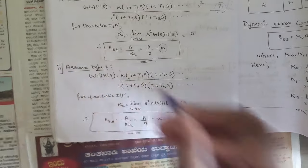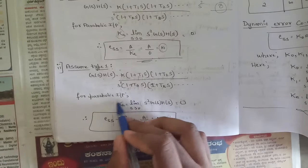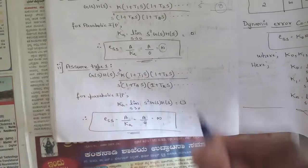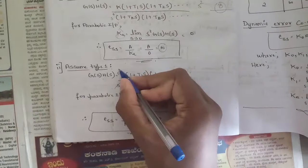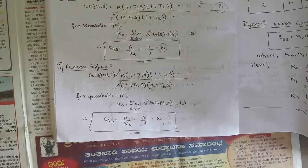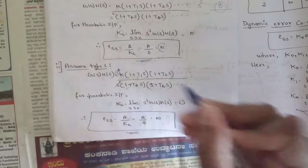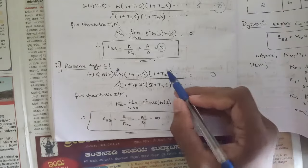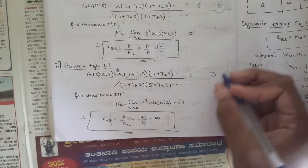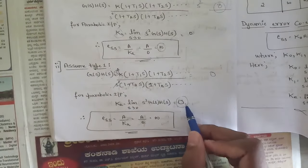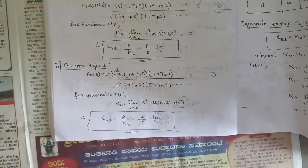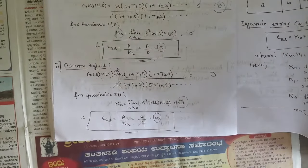For a Type 1 system with parabolic input, j = 1, so the denominator has s to the power 1. The expression ka = limit as s tends to 0 of s²·G(s)H(s) = s²·k/s. One s cancels, leaving s·k in the numerator. As s → 0, this gives 0, so ka = 0. Therefore ess = a/0 = infinity.